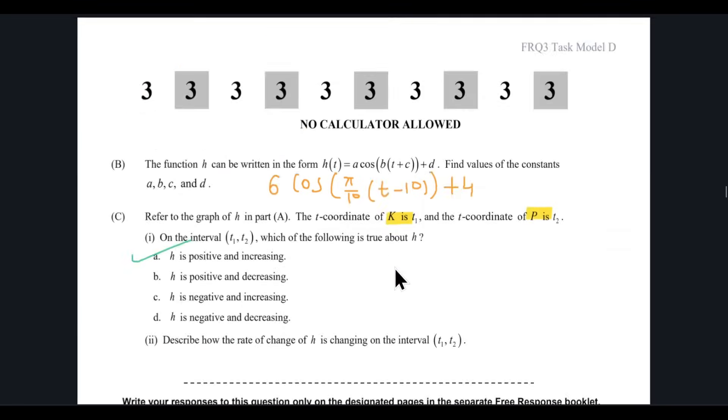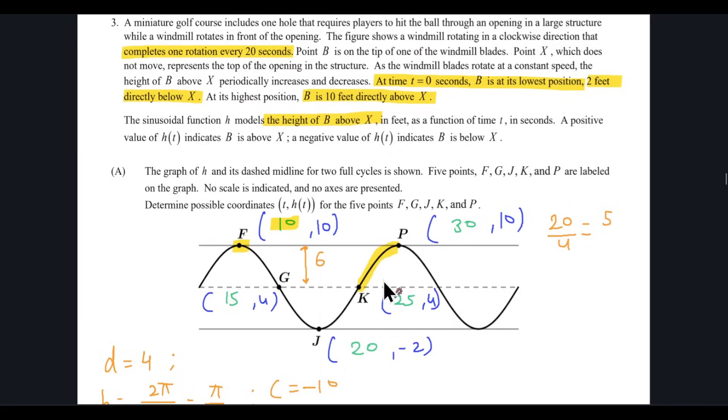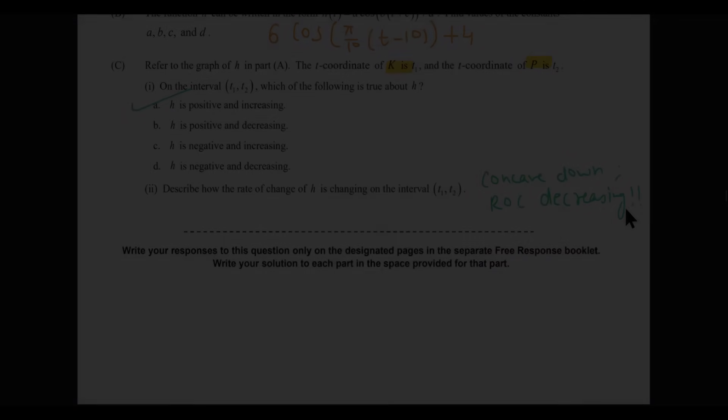And they're asking, how is the rate of change changing? So rate of change changing means that they ought to comment on the concavity. We can see that this is a frowning phase. A frowning phase would mean that it is concave down. And concave down would mean that since it is concave down, this means that the rate of change is decreasing over here.